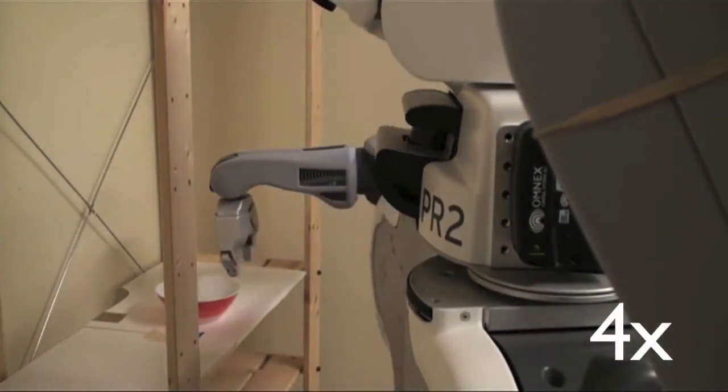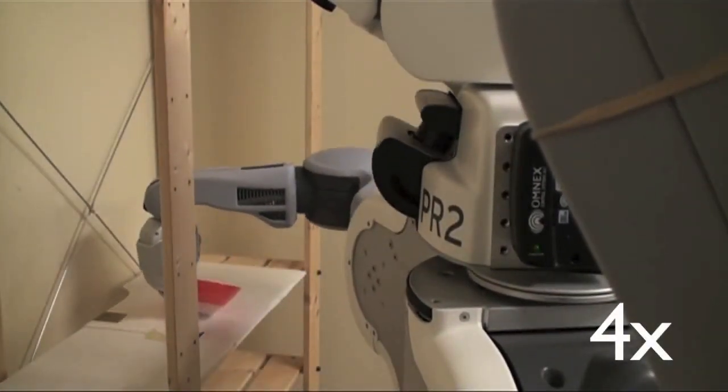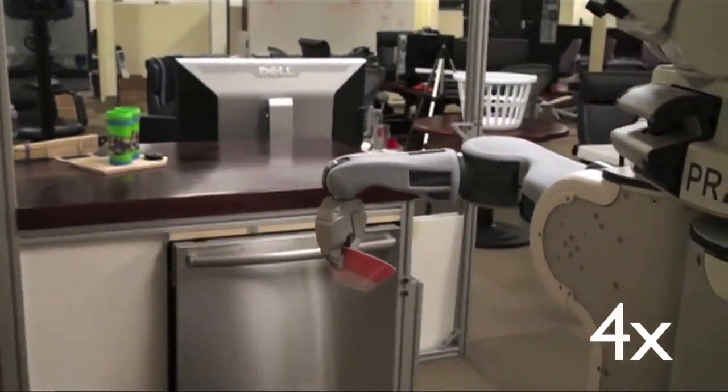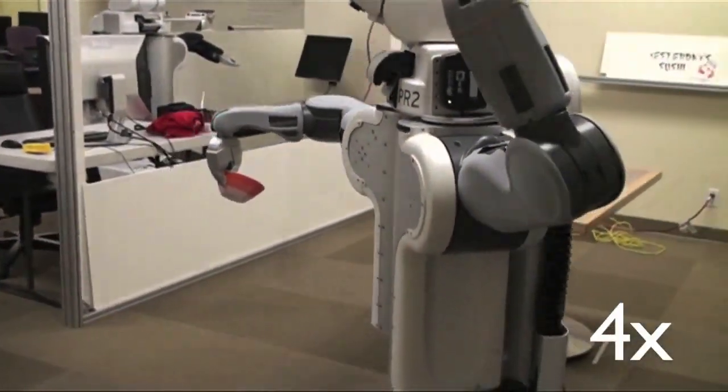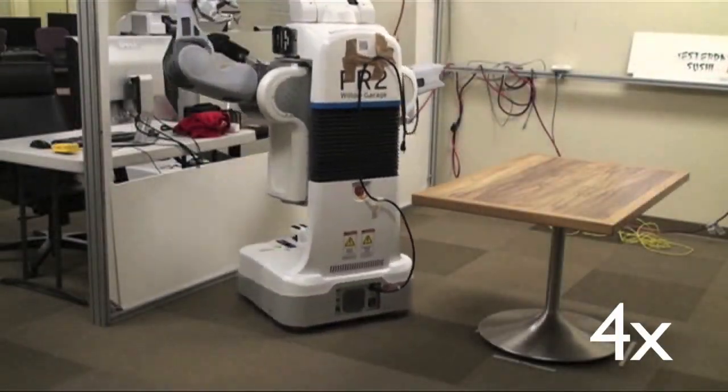Here you see the PR2 executing a plan for picking a bowl off of a shelf and placing it on a table. The planner plans the entire motion for both the arm and the base of the PR2 as well as the object.